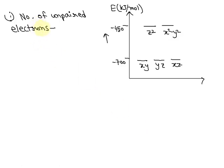Hi, in this question we need to find out the number of unpaired electrons in Co²⁺ when a strong field ligand is coordinating with it.